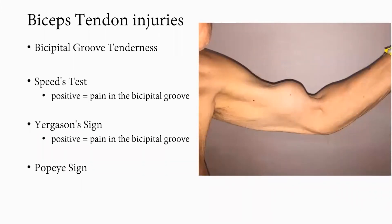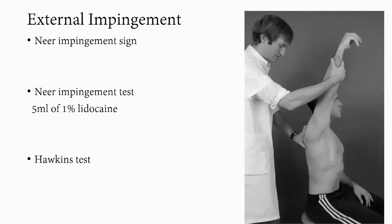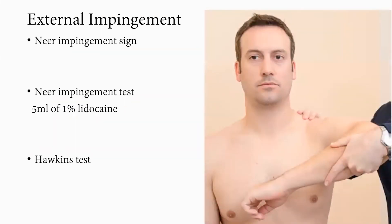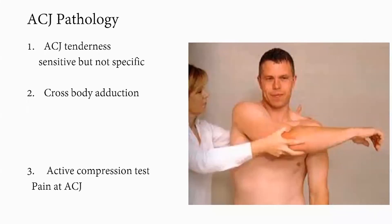Ruptures of the biceps tendon can be associated with the Popeye sign. For impingement testing, the Neer impingement test has the examiner stabilize the scapula while bringing the shoulder into abduction with internal rotation to reproduce anterolateral shoulder pain. The test can be repeated after injection of 1% lidocaine — relief of pain confirms the presence of impingement. The Hawkins test brings the shoulder to 90 degrees of abduction and then passively maximally internally rotates it, reproducing pain at the anterolateral shoulder.